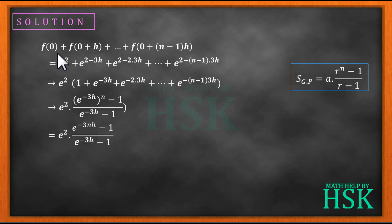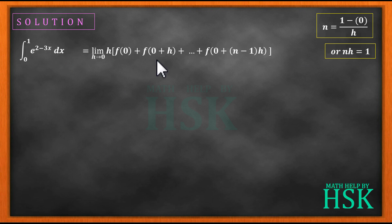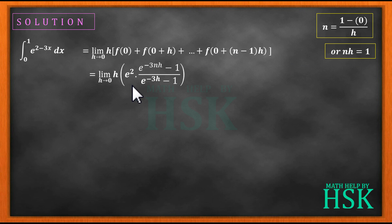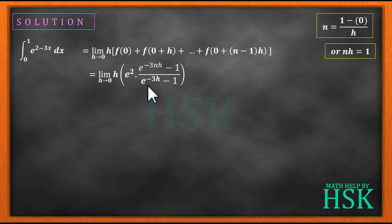Placing this total into the main expression, I obtain: limit of h tending to 0 of h times e squared times (e to the power of minus 3nh minus 1) upon (e to the power of minus 3h minus 1).